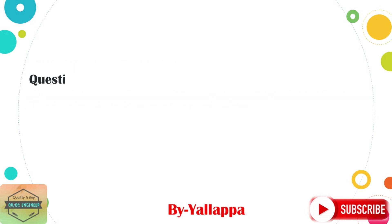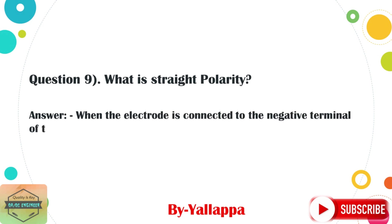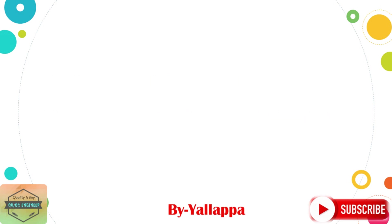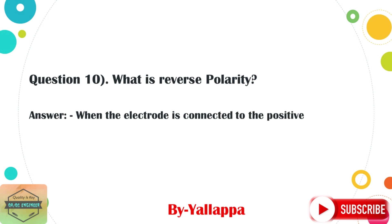Question 9: What is straight polarity? Answer: When the electrode is connected to the negative terminal of the power source. Question 10: What is reverse polarity? Answer: When the electrode is connected to the positive terminal of the power source.